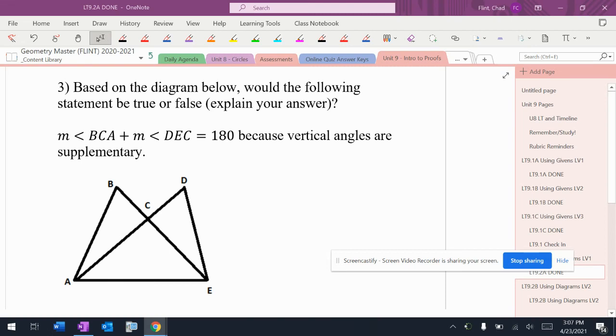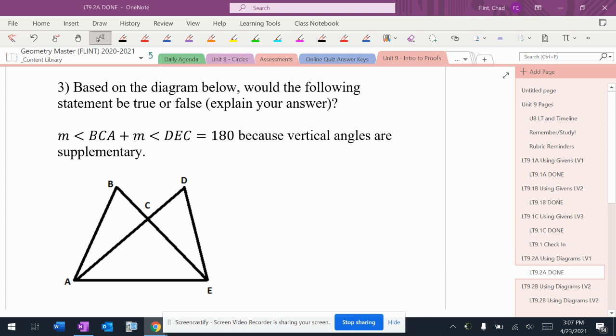So again, now I've got BCA plus DEC equals 180 because vertical angles are supplementary. So again, depending on where you're at, you may look at that and be like, well, vertical angles aren't supplementary.